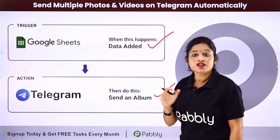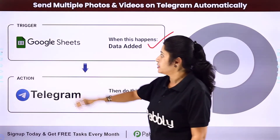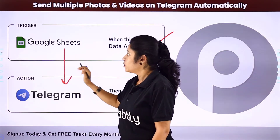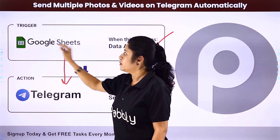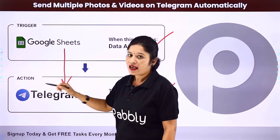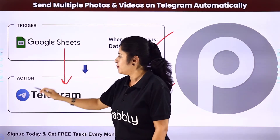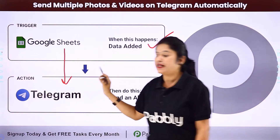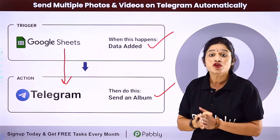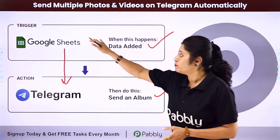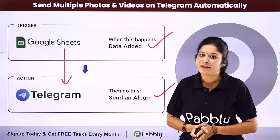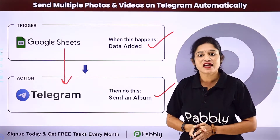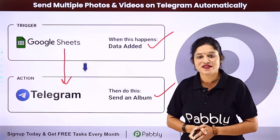For that you need to integrate your Google Sheets with Telegram. Here your trigger application would be Google Sheets and your action application would be Telegram. We are going to integrate both these software applications using Pabbly Connect.